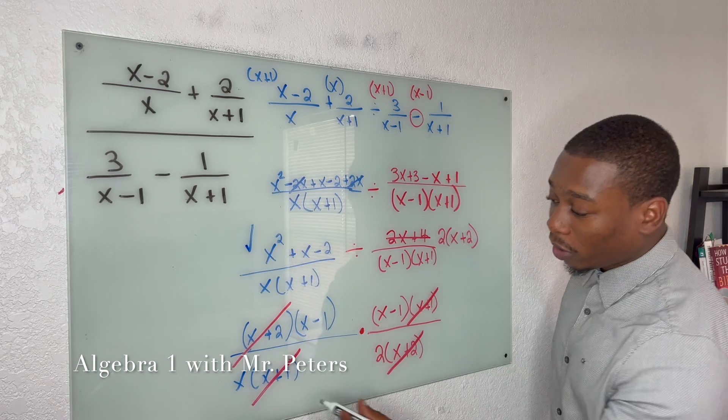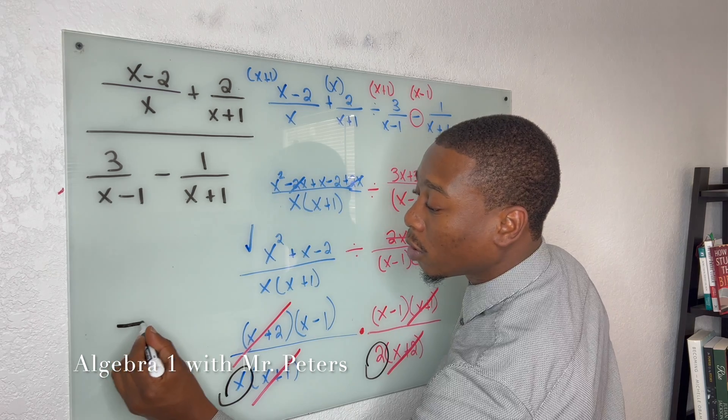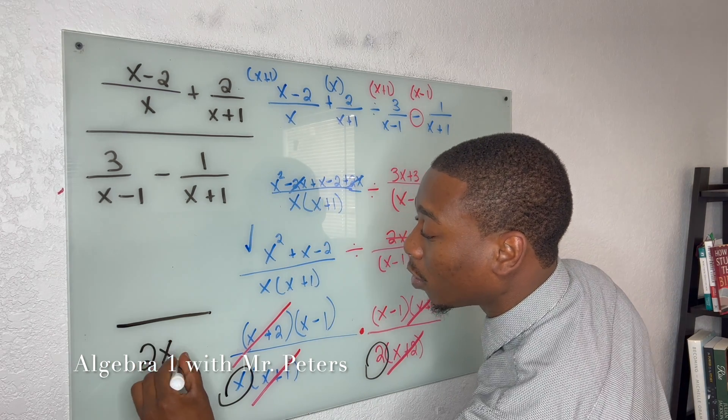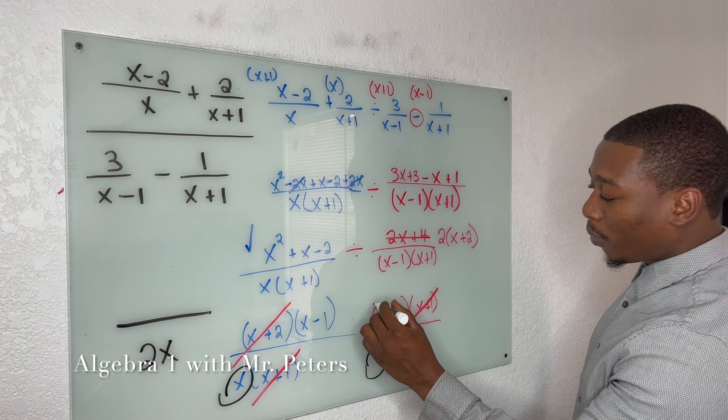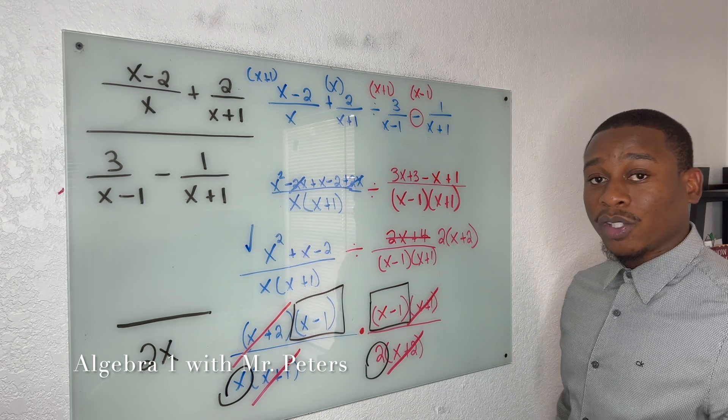I'm going to circle it. So we're left with x times 2 on the bottom, because we're going to have a fraction as the answer. So we have 2x on the bottom. And then on the top, we have x minus 1 times x minus 1.